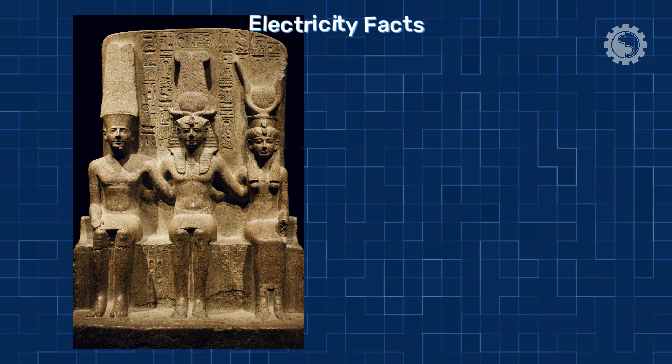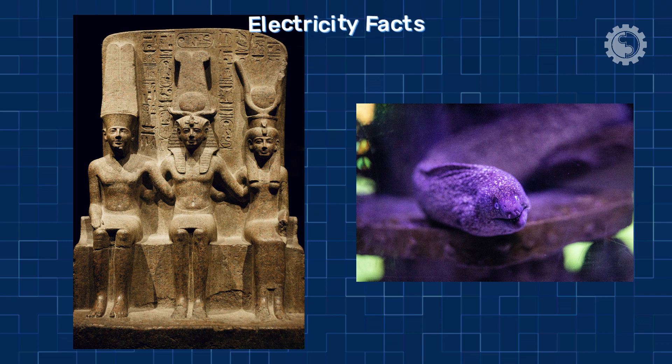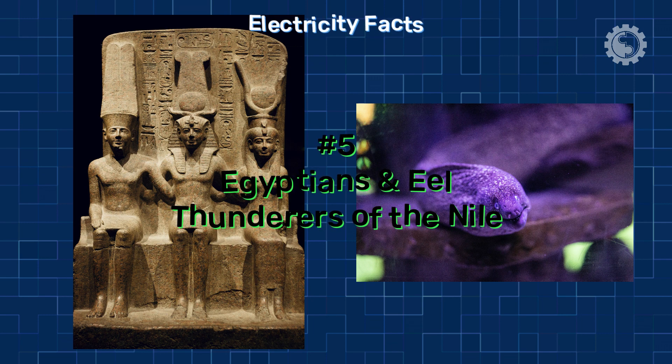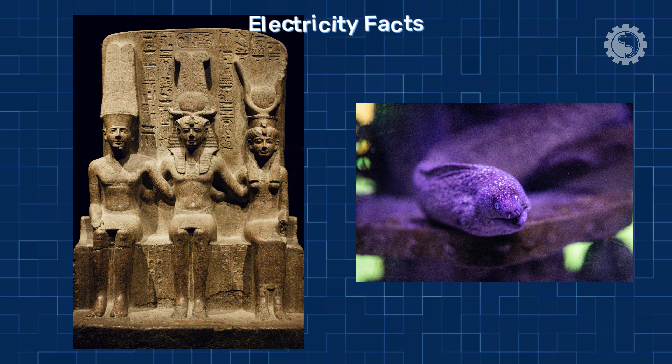The ancient Egyptians knew a lot about electricity before we started using it for many things. They knew how strong lightning was and how electric fish could shock them. They called these amazing animals the Thunderers of the Nile.